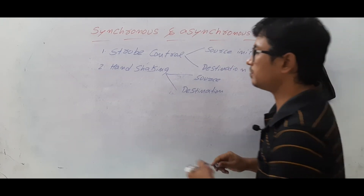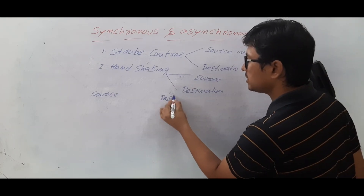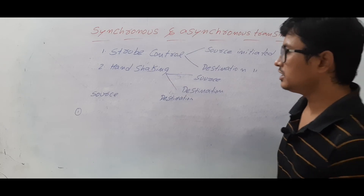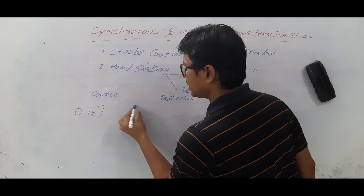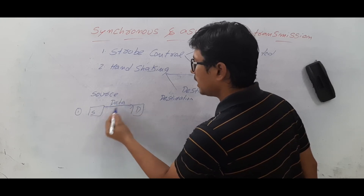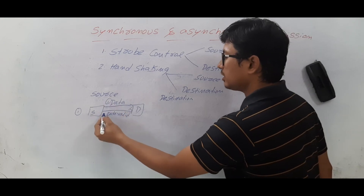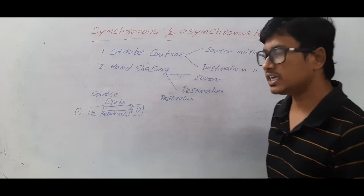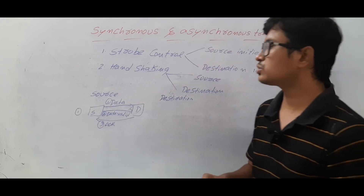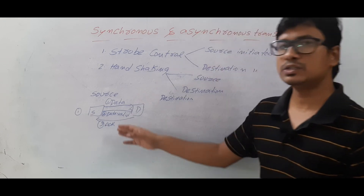The handshaking mechanism is classified into two types: source-initiated handshaking and destination-initiated handshaking. In source-initiated handshaking, we have a source and a destination. First, the source sends the data and also sends a signal called 'valid data.' Once the destination receives this data, it sends an acknowledgement back to the source — that is step three. Once the source receives the acknowledgement, it knows the data was delivered successfully. This makes the communication reliable.